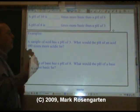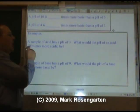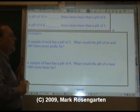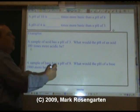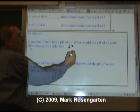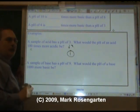Here's some more examples. If an acid has a pH of 3, what would the pH of an acid 100 times more acidic be? Well, if this is 100, that's 2 powers of 10. We're going to drop this number by 2. That would be a pH of 1, would be 100 times more acidic than a pH of 3.